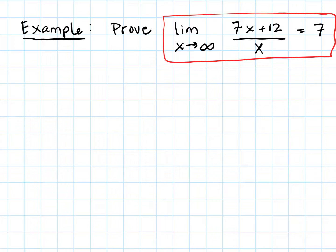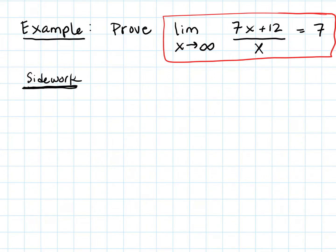Just like with our other types of limits — limits at a point rather than limits at infinity — we need to do a little bit of side work. When writing proofs, we often do some side work first to get ourselves what we need, and then we go into the proof and formalize it.